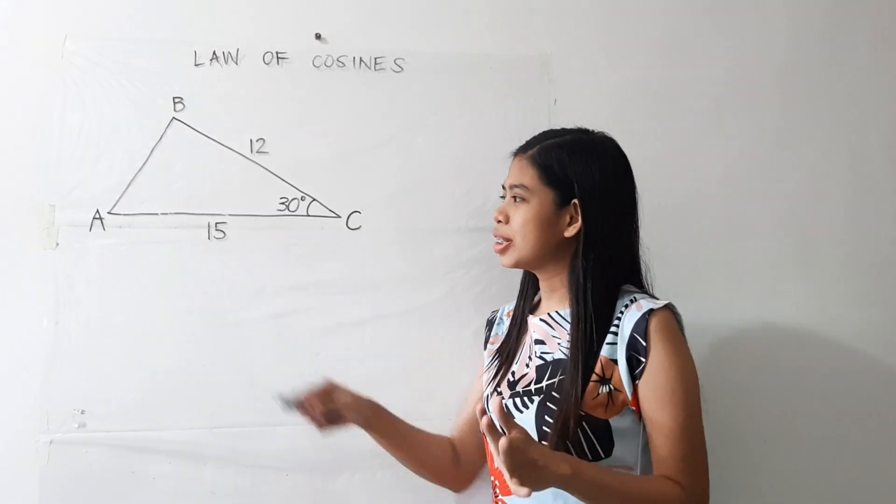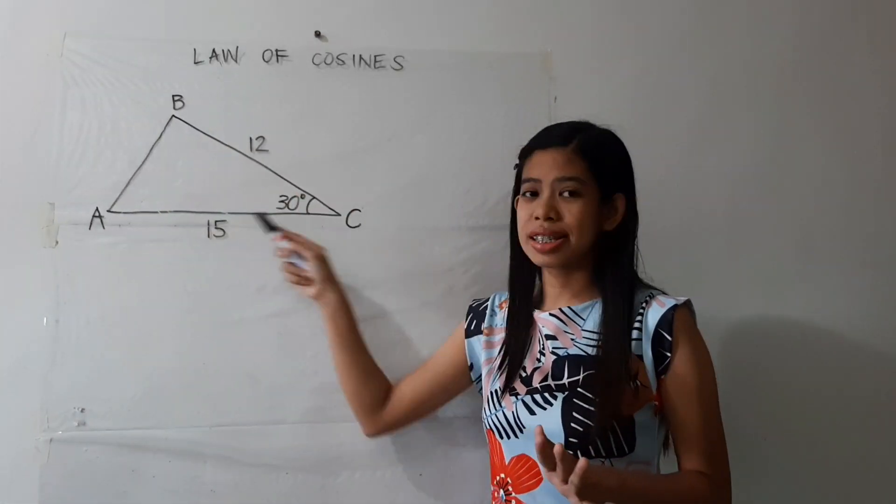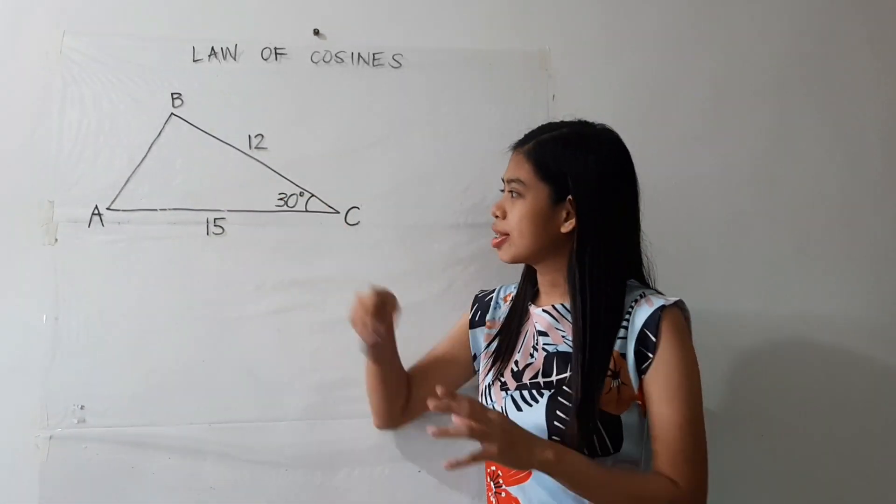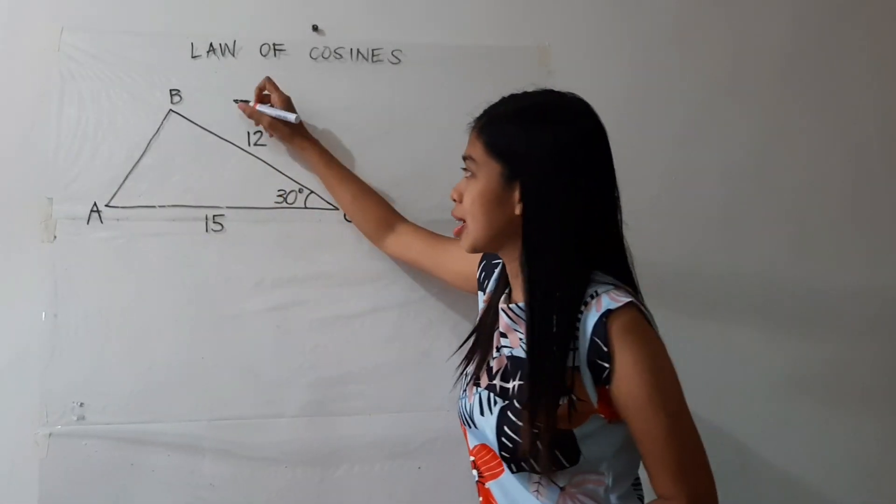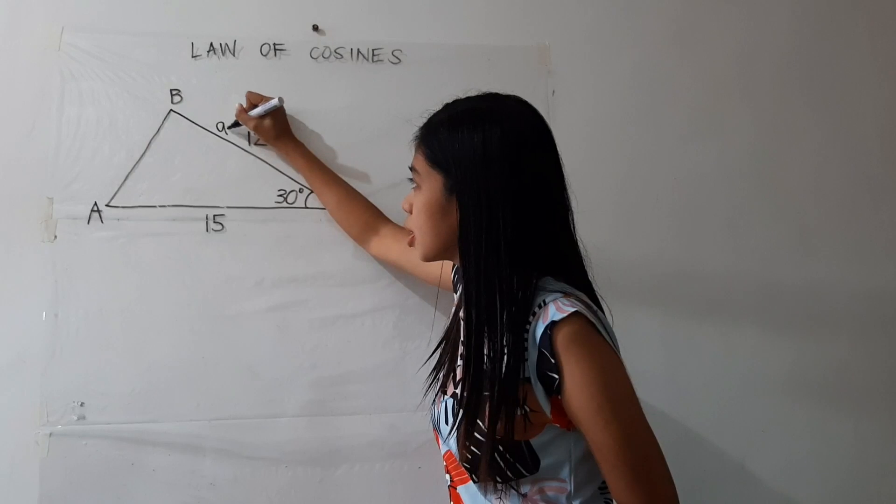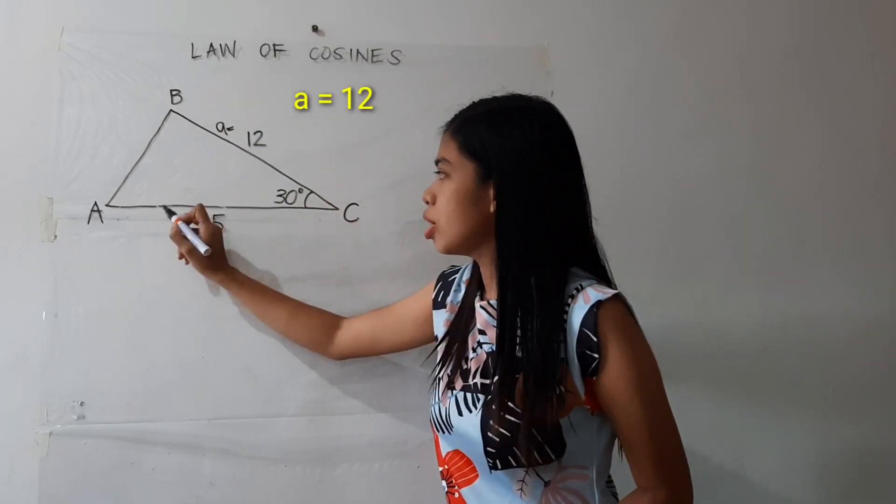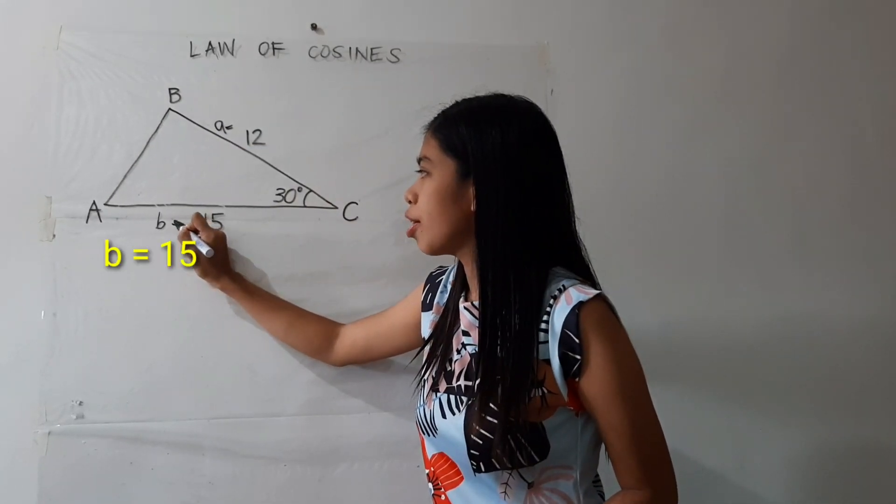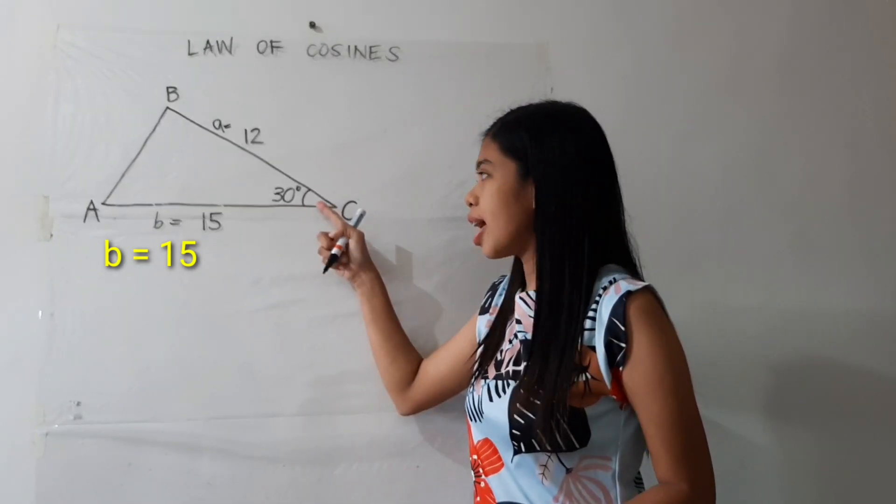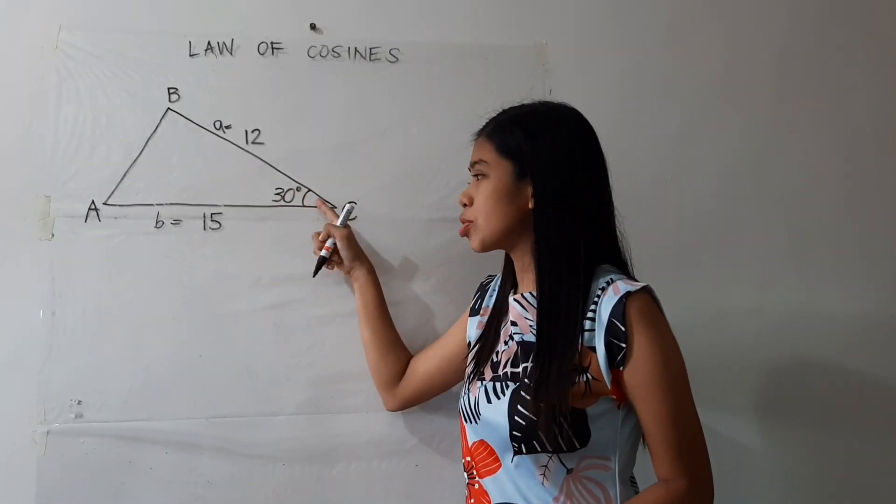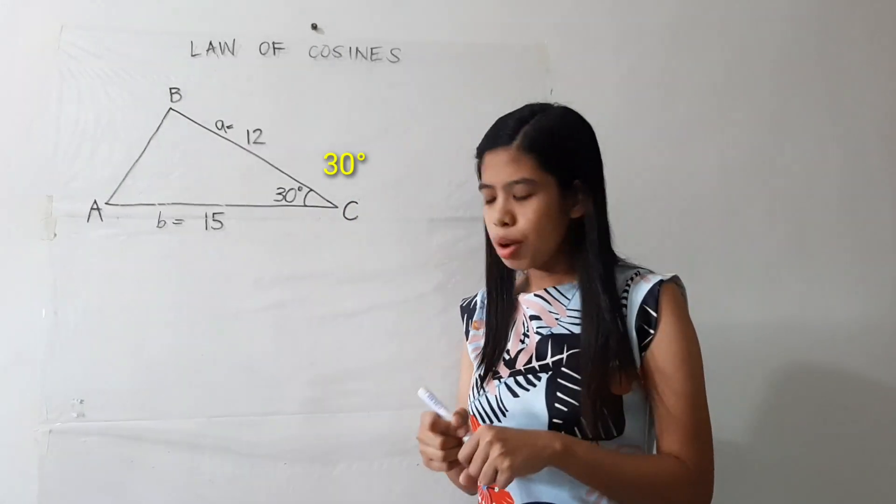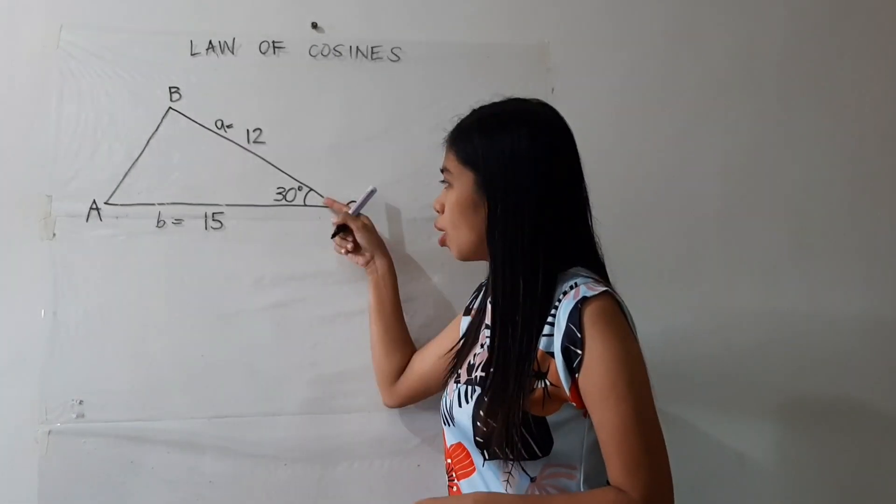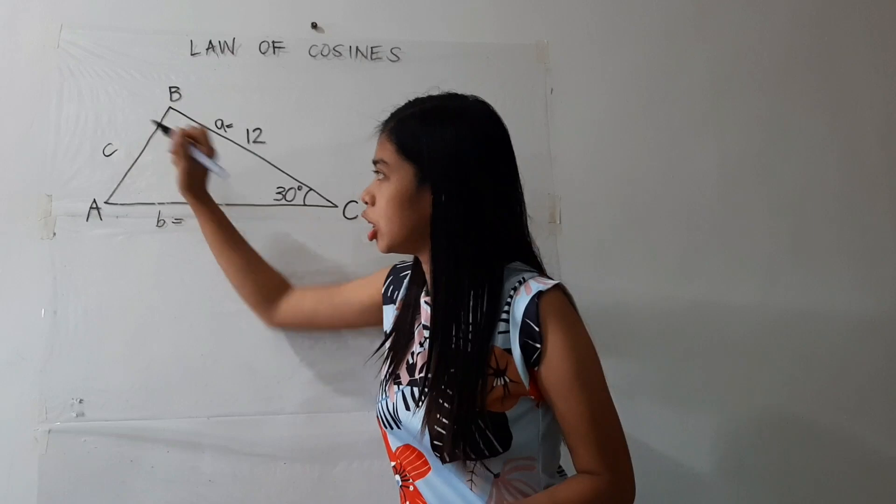Alright, so suppose you were given triangle ABC with side A which is already given, that's 12 units, its side B which measures 15 units, and an angle between them which measures 30 degrees, that is the angle C. Now you were asked to find the measure of side C.